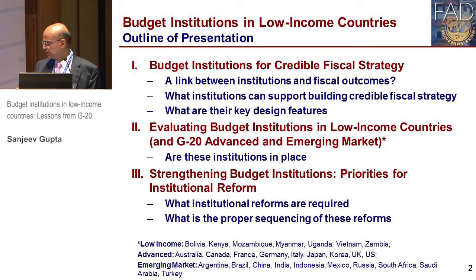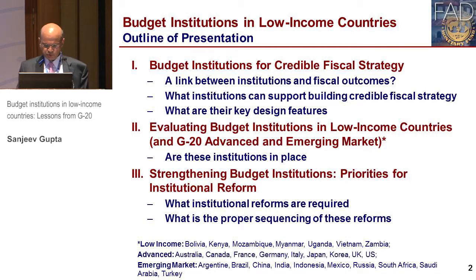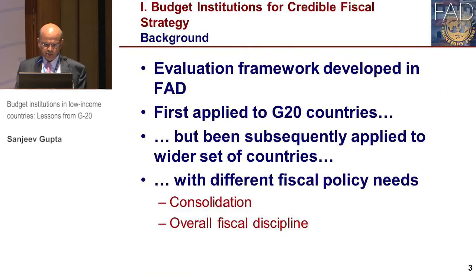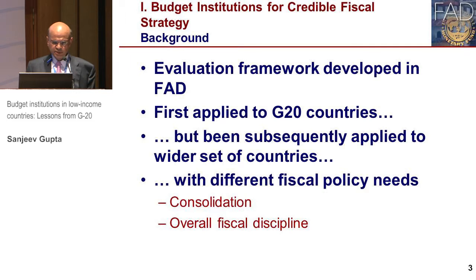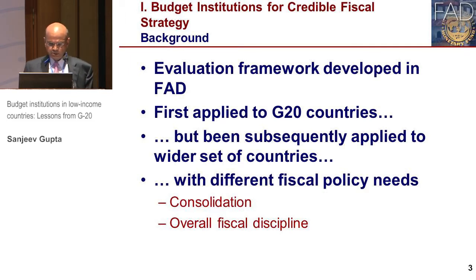As you can see, these countries cover a wide set of groups which are in different parts of the world. And then in conclusion, I will list out the priorities for institutional reform and how one could sequence those reforms.